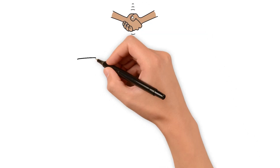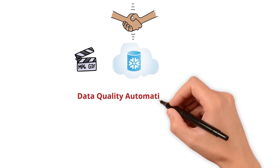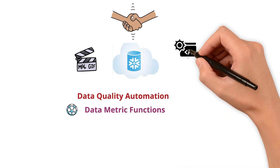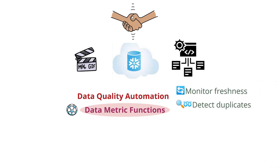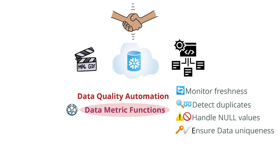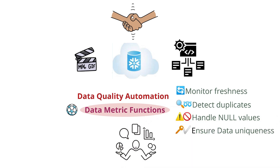Hi everyone. In today's video, we are going to explore how Snowflake simplifies data quality automation with its powerful data metric functions. You don't need to build complex frameworks from scratch. Snowflake's built-in data metric functions allow you to monitor freshness, detect duplicates, handle null values, and ensure data uniqueness with ease. Let's break it down and see how you can leverage this feature to enhance your data quality effortlessly.